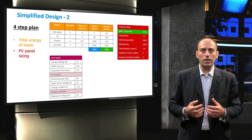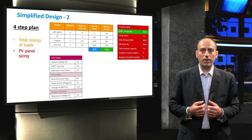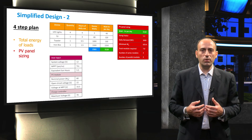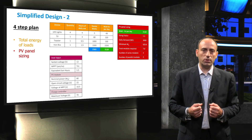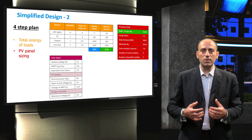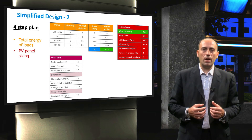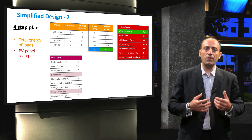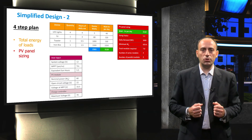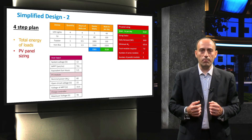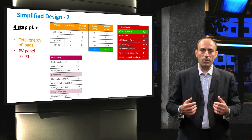Suppose the charge controller does not have an MPPT function — the load voltage will determine the PV output voltage. Finally, since we now know the minimum number of modules required and the number of modules that should be connected in series, the number of modules in parallel can be obtained.